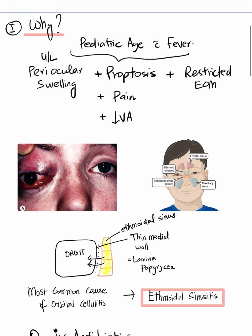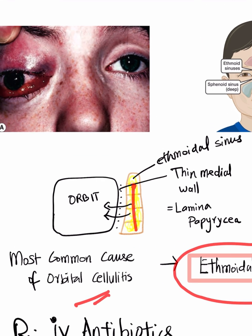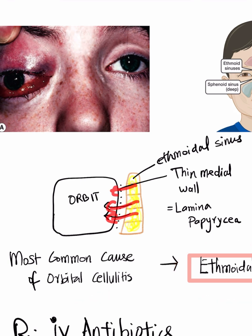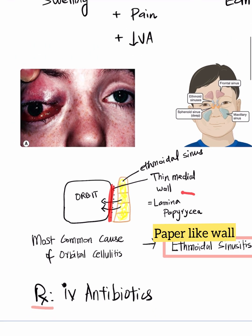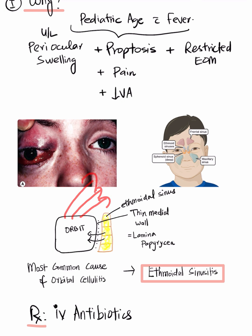The most common cause is ethmoid sinusitis, where there is inflammation in the ethmoid sinus cavities that can easily spread into the orbital cavity through the thin medial wall of the orbit, called the lamina papyracea. This is not just a vision-threatening but also a life-threatening disease, as the inflammation can track back to the brain — so we must treat aggressively with intravenous antibiotics.